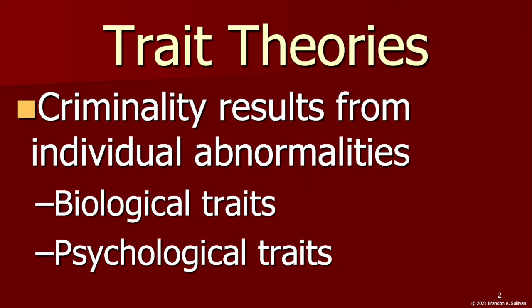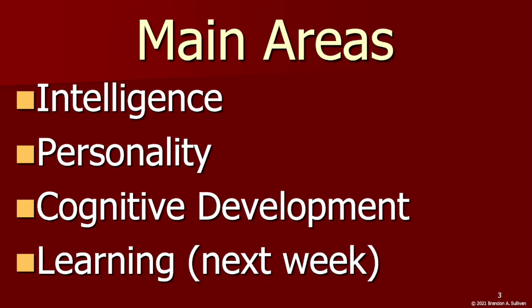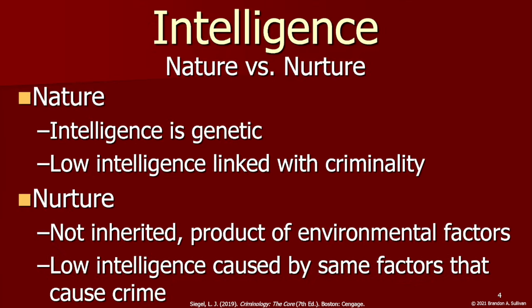Trait theories center around the view that criminality is a product of abnormal biological or psychological traits. We looked at biological theories last week. This week, we cover psychological theories. The main areas we'll look at are intelligence, personality, cognitive development, and learning, which we'll cover next week. Let's begin right off the bat with the most controversial: intelligence.